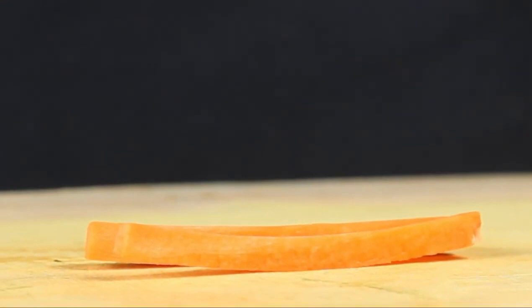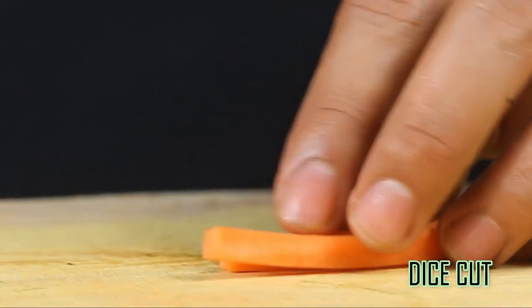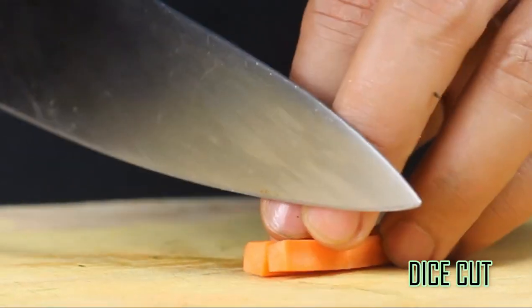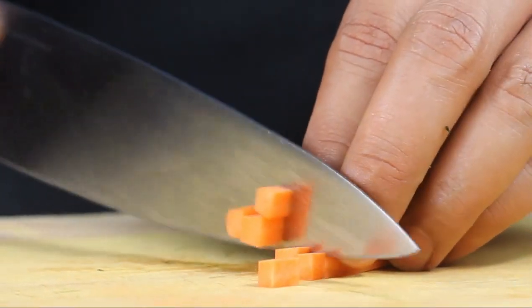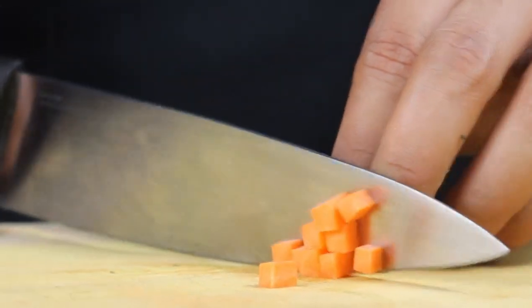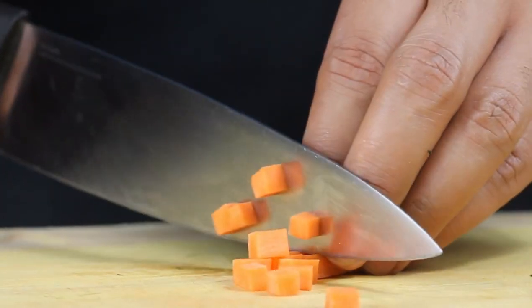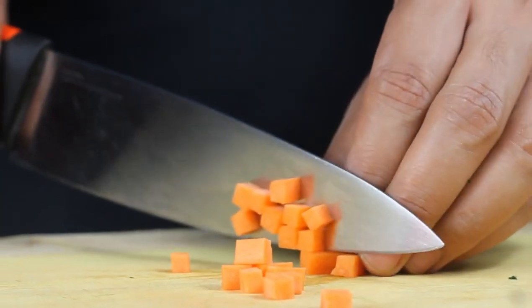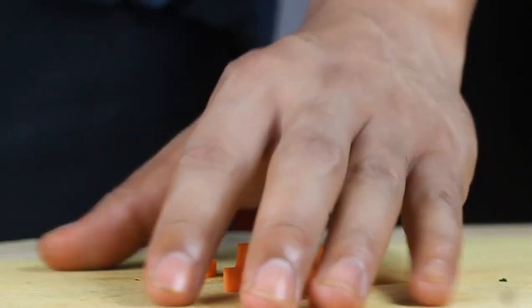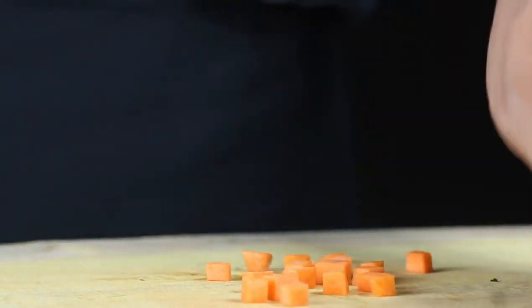Next cut is dice. Generally smaller than a standard cube, the diced cut also creates uniform squares for even cooking and polished look. Dicing is often used to make a classic salsa or mirepoix, a mixture of carrots, onions, and celery.